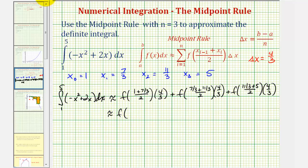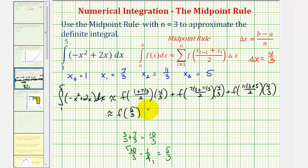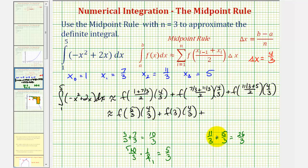Simplifying the midpoints: one plus seven-thirds is three-thirds plus seven-thirds, which is ten-thirds; divided by two gives five-thirds. So f of five-thirds times four-thirds. For the second term: seven-thirds plus eleven-thirds is eighteen-thirds, which is six; six divided by two is three. So f of three times four-thirds. For the third term: eleven-thirds plus five is eleven-thirds plus fifteen-thirds, which is twenty-six-thirds; divided by two is thirteen-thirds. So f of thirteen-thirds times four-thirds.